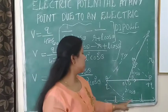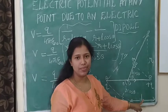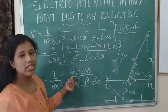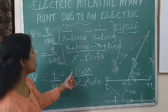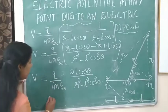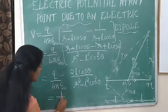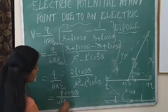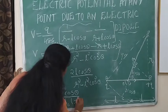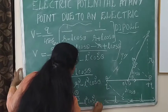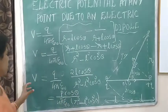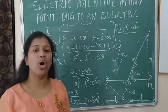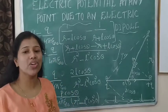We know that Q into 2L is the dipole moment P — charge multiplied by dipole length. Substituting Q into 2L with P, the final equation becomes: V equals P cos theta divided by 4 pi epsilon naught into (R squared minus L squared cos squared theta).